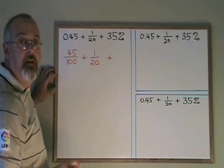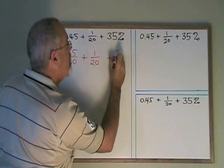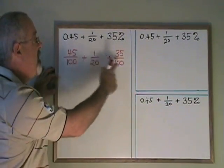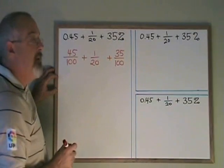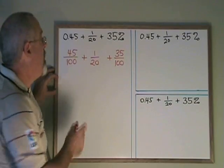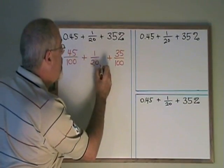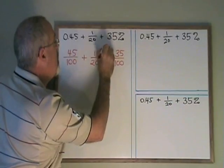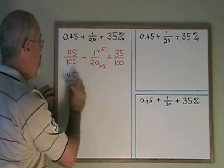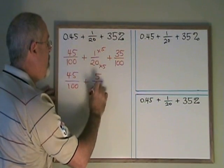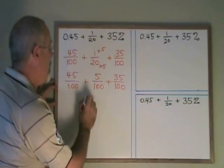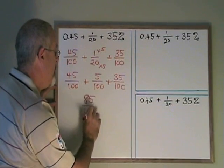We'll leave 1 20th the way it is for now. 35%, well, percent means over a hundredth. So 35% is very easy to convert to a fraction. It means 35 over a hundredth. To get a common denominator, we have two fractions that already have a hundredth as the denominator. I'm going to choose to expand this fraction so that it also has a hundredth. 20 times 5 will give me a hundredth. 1 times 5 will give me 5 as my new numerator. So I end up with 45 over 100 plus 5 over 100 plus 35 over 100. Adding these together, I get 85 over 100 as my answer.